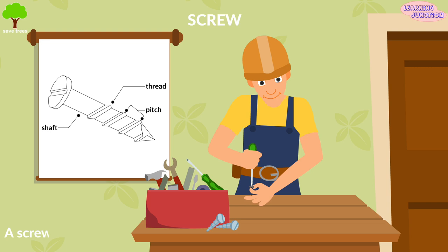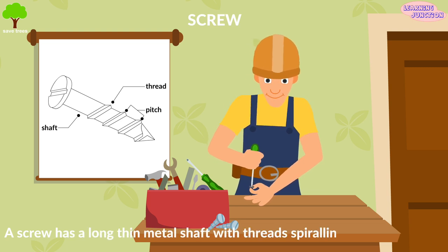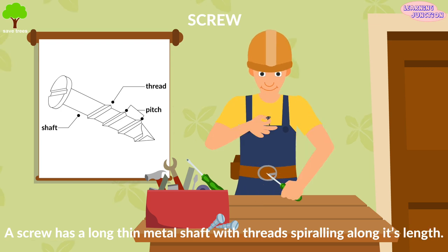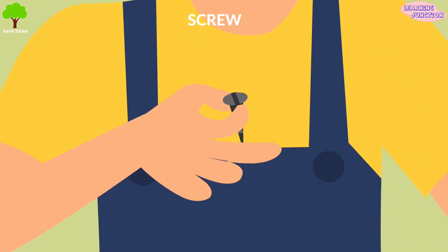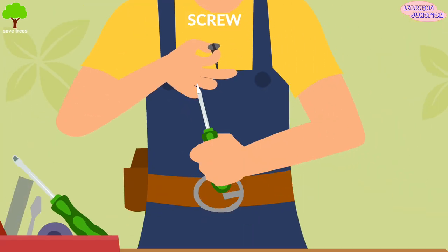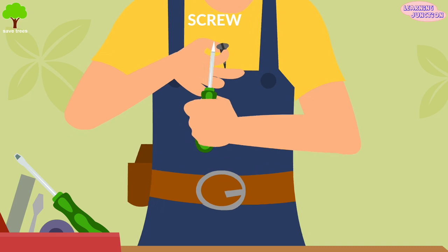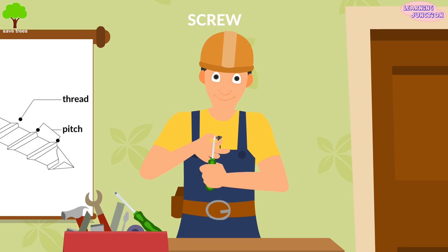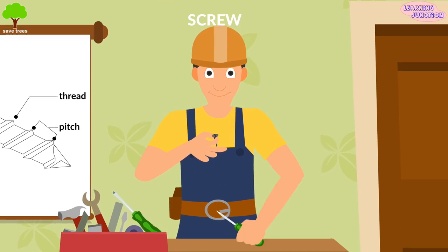Screw. A screw has a long thin metal shaft with threads spiraling along its length. It also has a turning head with a groove where a screwdriver can be used to rotate the screw. It can be used to lift things or to hold things together.